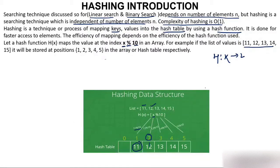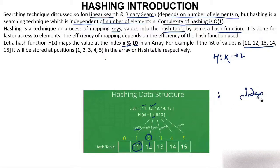So what you are actually doing is applying a hash function — which is modulus — on keys 11, 12, 13, 14, and 15, which gives you a location L. L is the index. The space or locations where we are storing all these keys is called the hash table.